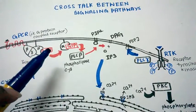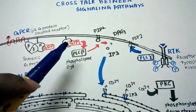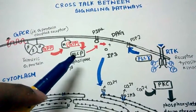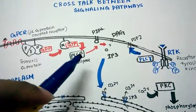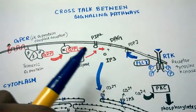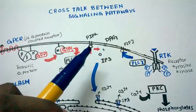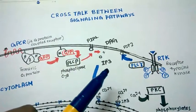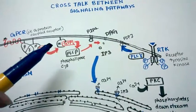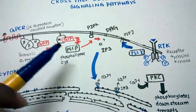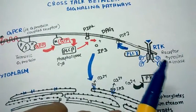The GDP is exchanged with GTP, and this GTP activates phospholipase beta. Phospholipase beta cleaves PIP2, phosphatidylinositol bisphosphate, into IP3 and DAG. Both IP3 (inositol trisphosphate) and DAG (diacylglycerol) are second messengers.